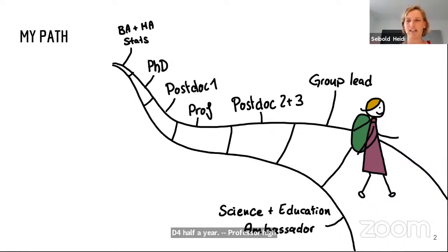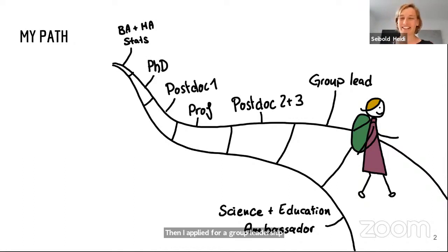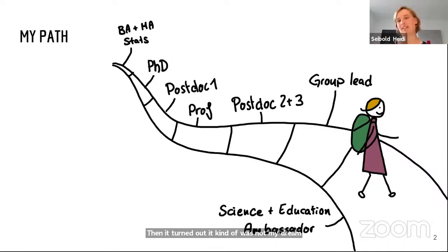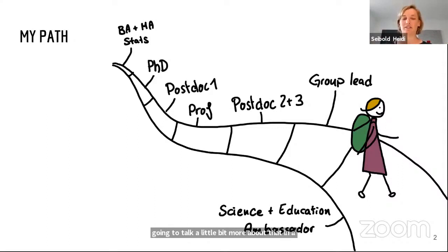I was already a bit of an unconventional postdoc, working mostly on open science and reproducible research with a focus on AI and medicine. Then I applied for a group leadership position at Helmholtz AI, which I was very lucky to get. I really thought this was going to be my dream job. Then it turned out it wasn't my dream job because I wasn't a real researcher anymore at the time. I figured I needed to change something and tell people that this was not my identity anymore. Now I'm more on the meta level — thinking a lot about how we can do science and education better, and trying to implement that in a new way and in a new setting.